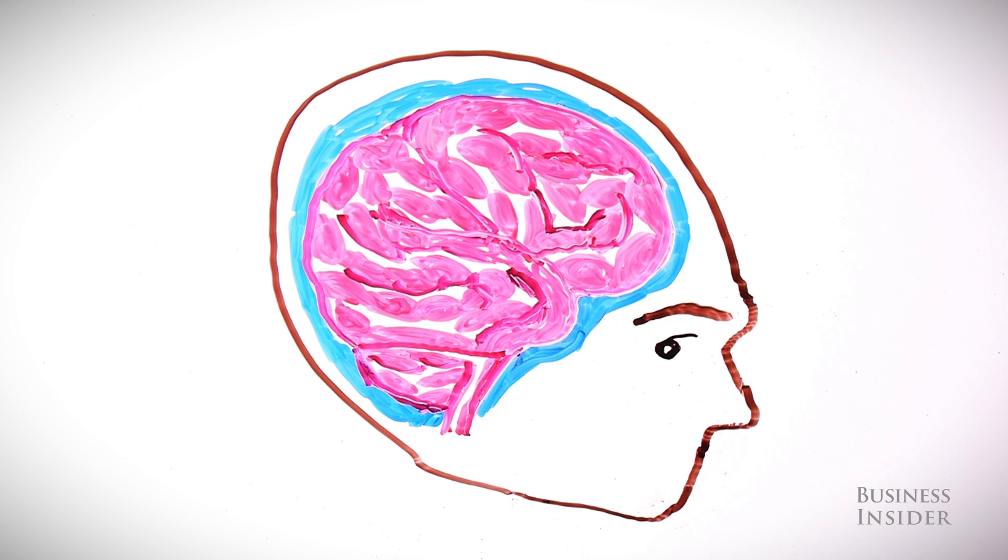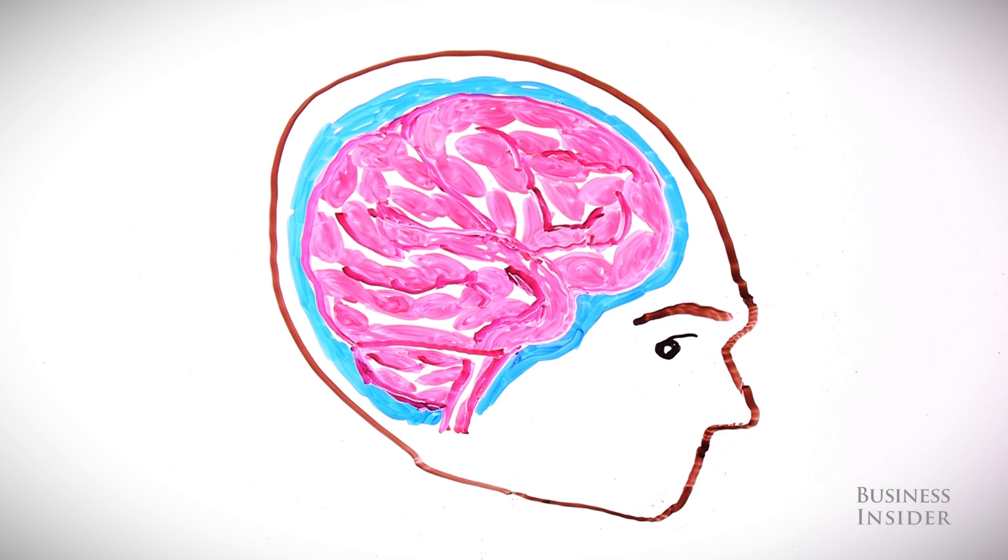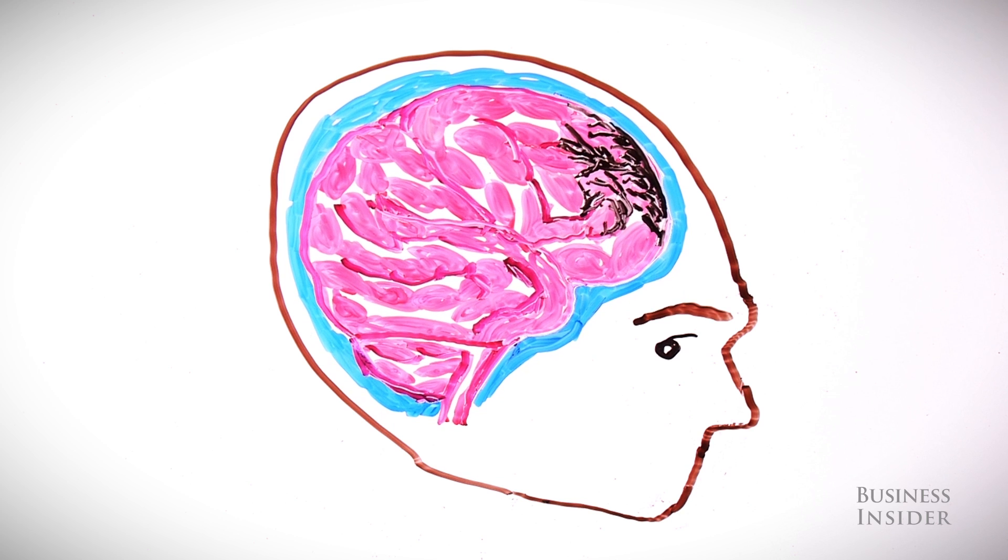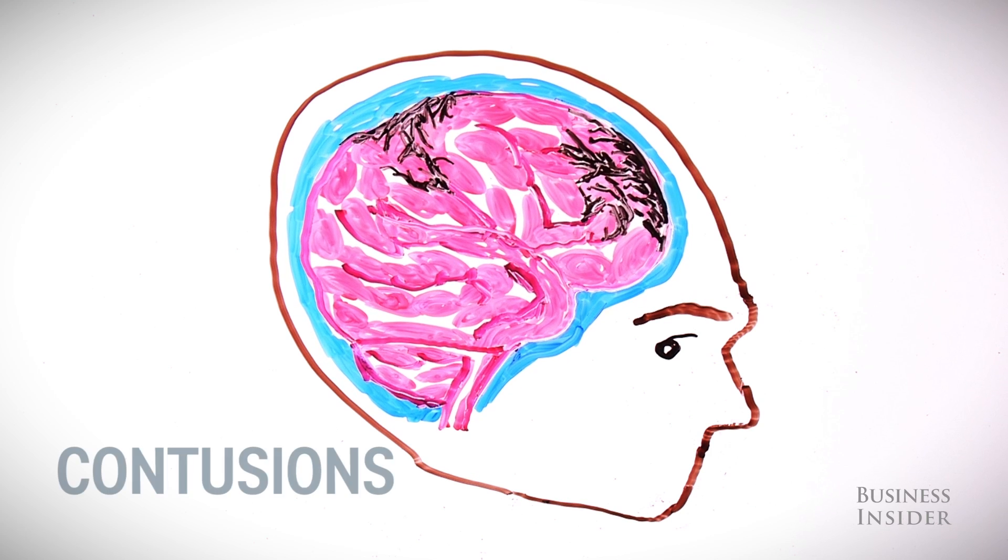The impact of the brain sloshing around can strain and damage fragile brain tissue and, in more serious cases, cause bruising and bleeding, referred to as contusions and hematomas.